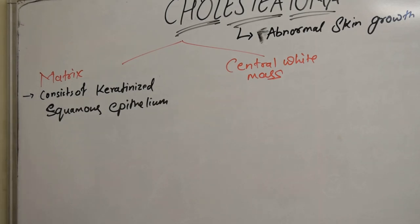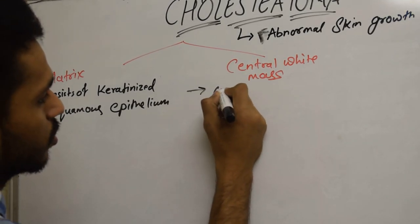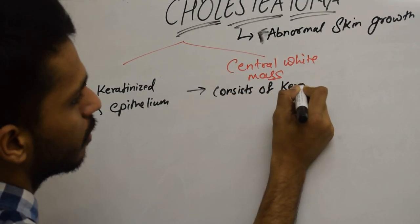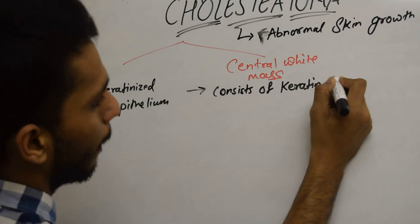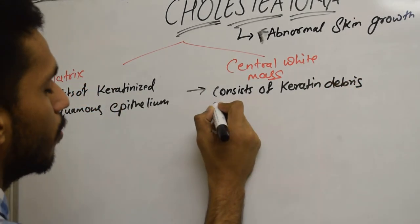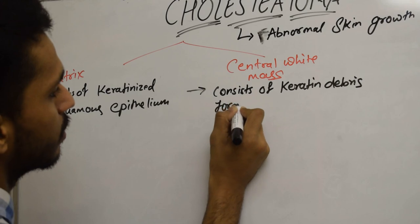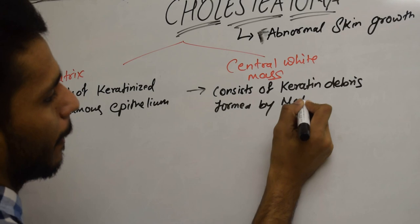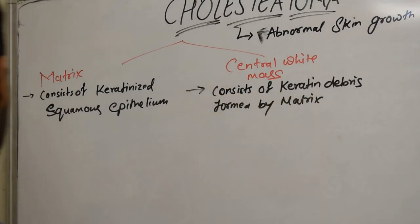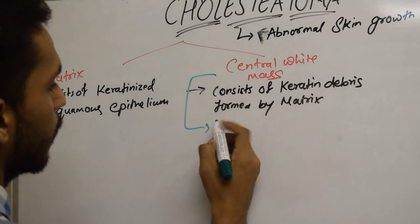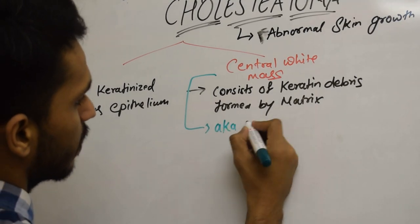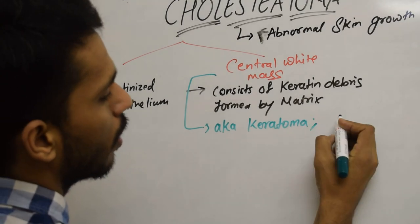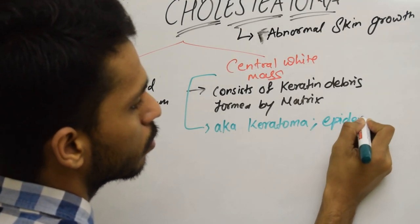The second part is a central white mass, which consists of keratin debris formed by the matrix. This central white mass is also known as keratoma, and also as epidermosis.